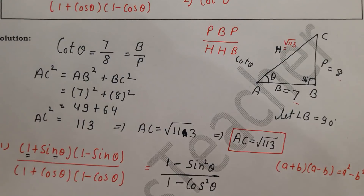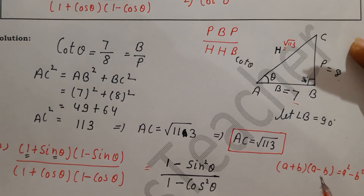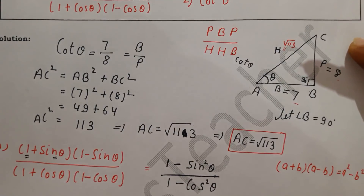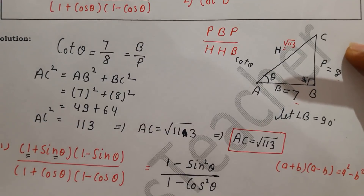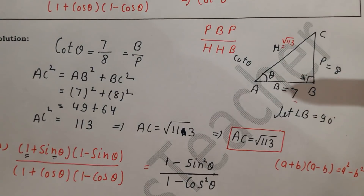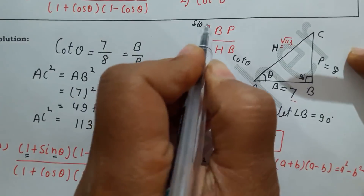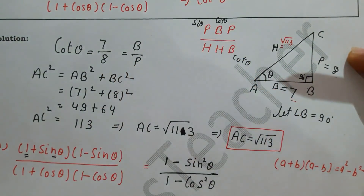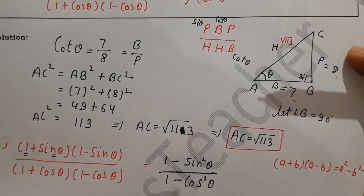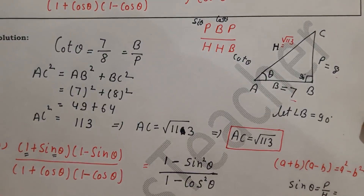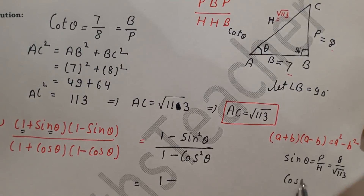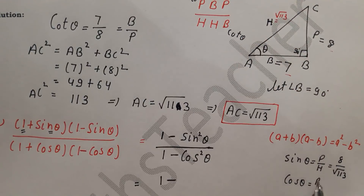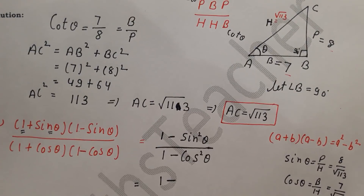We are solving using the simple triangle method. sin θ = perpendicular/hypotenuse = p/h, and cos θ = base/hypotenuse = b/h. From our triangle, perpendicular = 8 and hypotenuse = √113, so sin θ = 8/√113. And cos θ = base/hypotenuse = 7/√113.